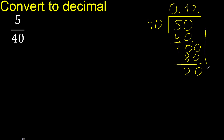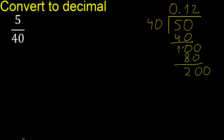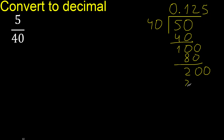Complete, now with 200. 40 multiplied by 5 is 200. Subtract, the remainder is 0 — therefore finish.